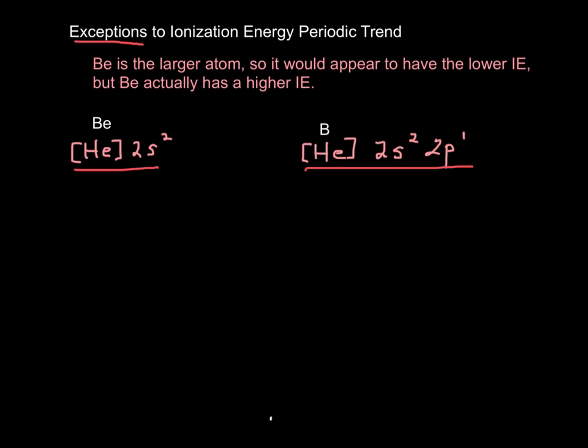On the periodic table, beryllium comes first and then boron, so beryllium is a bigger atom, so you would think it would have a lower ionization energy, but as it turns out, it actually has a higher ionization energy. I'm going to try to explain why that is.